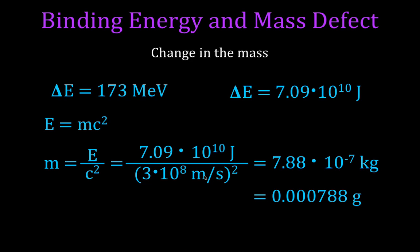So we found the binding energy difference in mega electron volts, the total energy in joules released from one gram, and the corresponding change in mass. Thank you for watching — if you found this helpful, please subscribe to the channel, give a thumbs up, and leave a positive comment below.